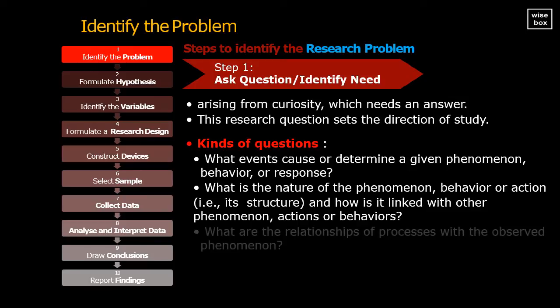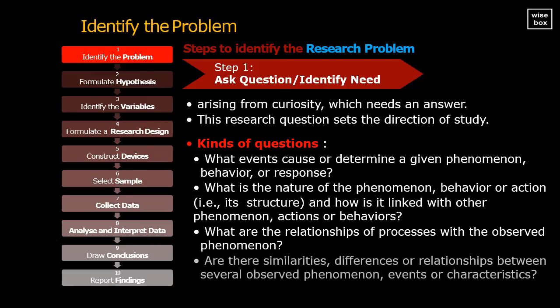What are the relationships of processes with the observed phenomenon? Are there similarities, differences, or relationships between several observed phenomenon, events, or characteristics?